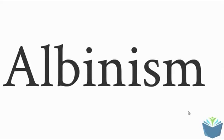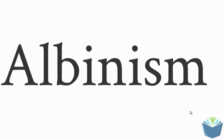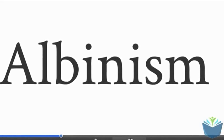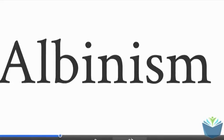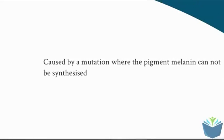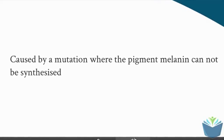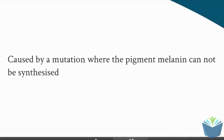One of the conditions that you are expected to know about is albinism. So albinism, or people that suffer from it referred to as albinos, is caused by a mutation where the pigment melanin cannot be synthesized. Melanin is the pigment within skin that causes you to be darker. So the darker you are, the more melanin you have.